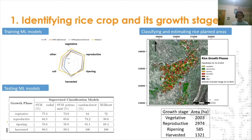From there, we were able to estimate that 2,003 hectares were in vegetative stage, 2,974 in reproductive stage, 585 in ripening, and 1,321 were recently harvested. This kind of information is useful for the National Federation to calculate total production for a region. Besides, it allows technicians to rapidly identify which areas should be affected by extreme climate events that are not favorable for any specific growth stage.